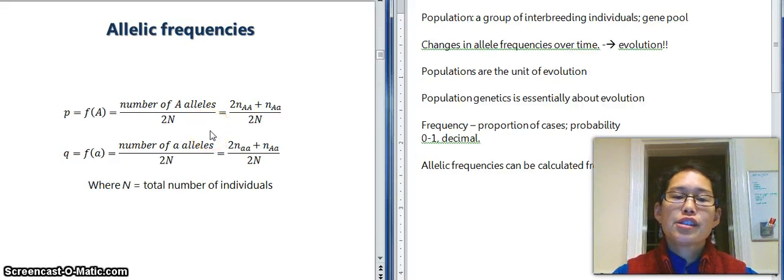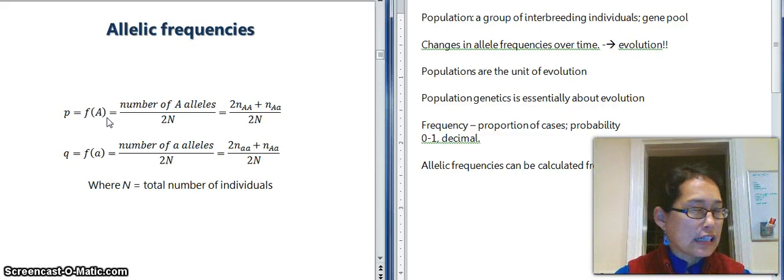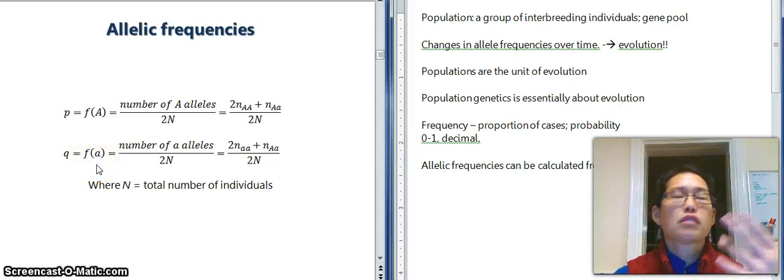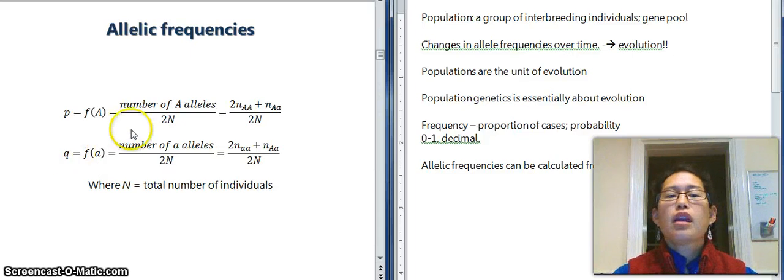So, again, just like with the genotypic frequencies, the number of individuals of that genotype in the population divided by the population size. The frequency of alleles, so typically we designate the frequency of one allele, let's say the dominant allele with a P, and then the frequency of the second allele, assuming we have a two allele locus with a Q. And we can calculate that as the number of the big A alleles out of the total number of alleles in the population because we're going to be considering a diploid population. It's two times N, which is the number of individuals because each individual has two copies of alleles.